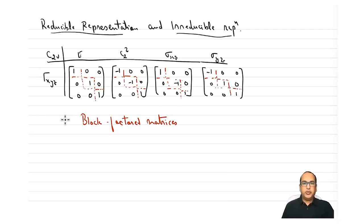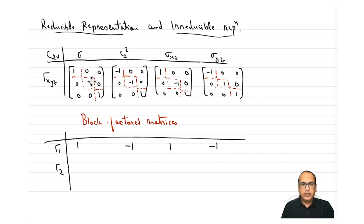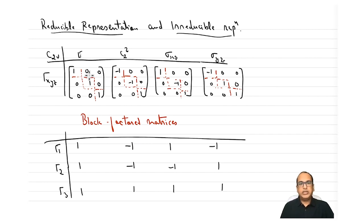Since these matrices have elements only along the diagonals, they are called block-factored matrices. This 3×3 representation can be written as a linear combination of three 1×1 matrices: τ1 with characters (1, −1, 1, −1), τ2 with (1, −1, −1, 1), and τ3 with (1, 1, 1, 1).